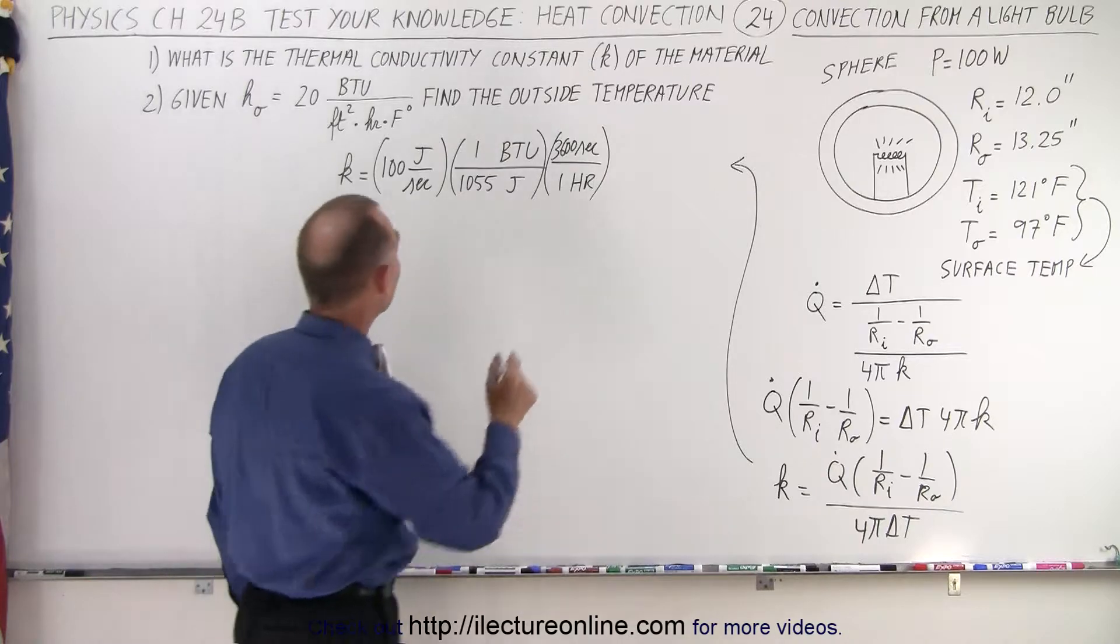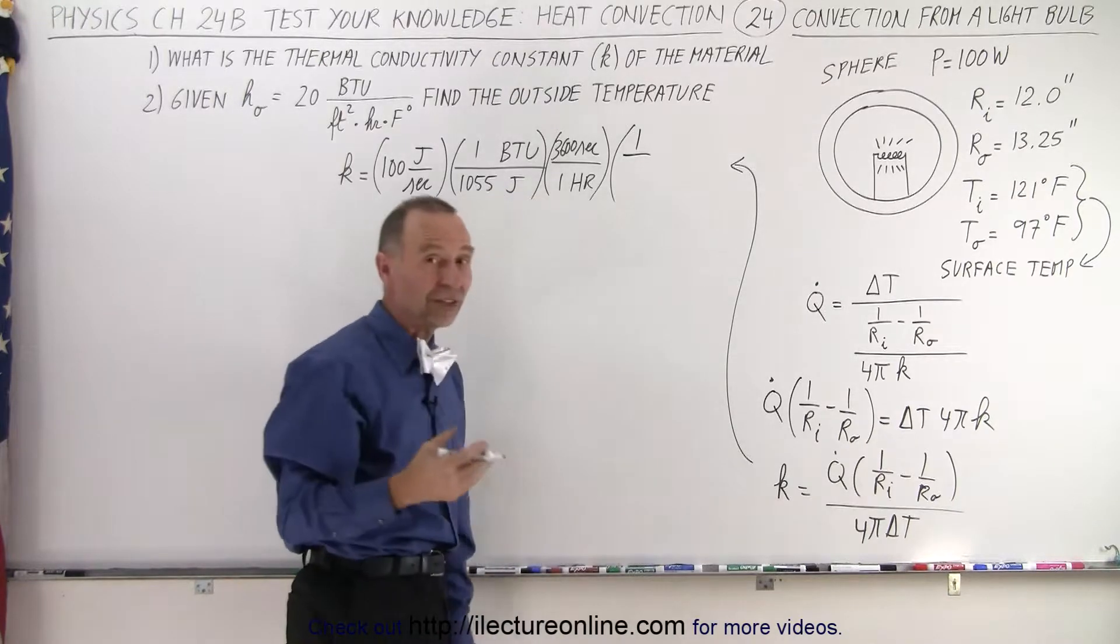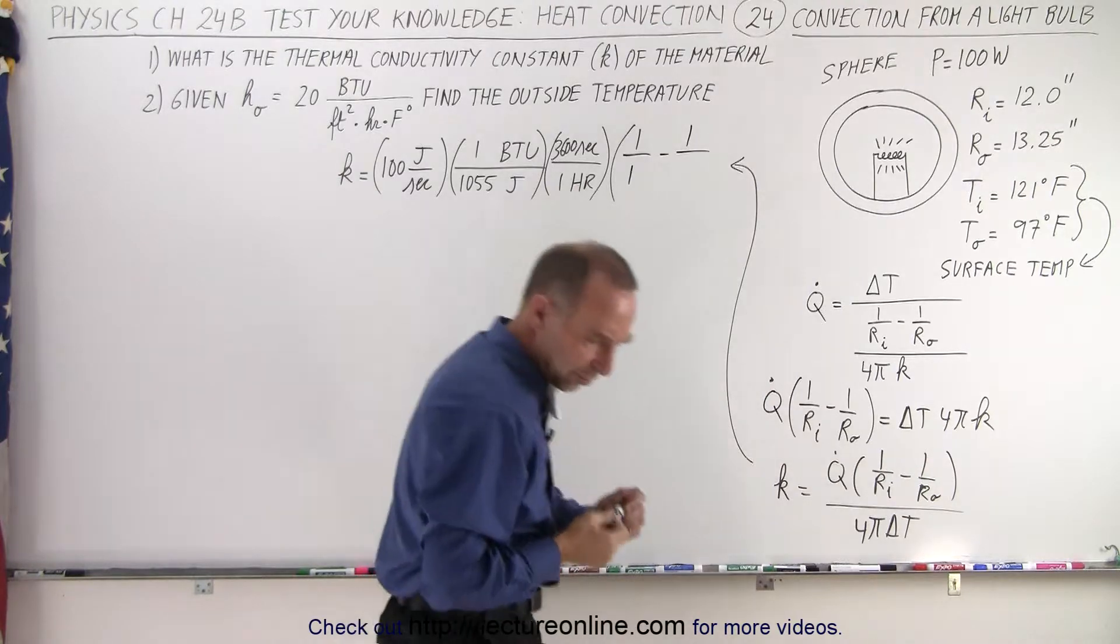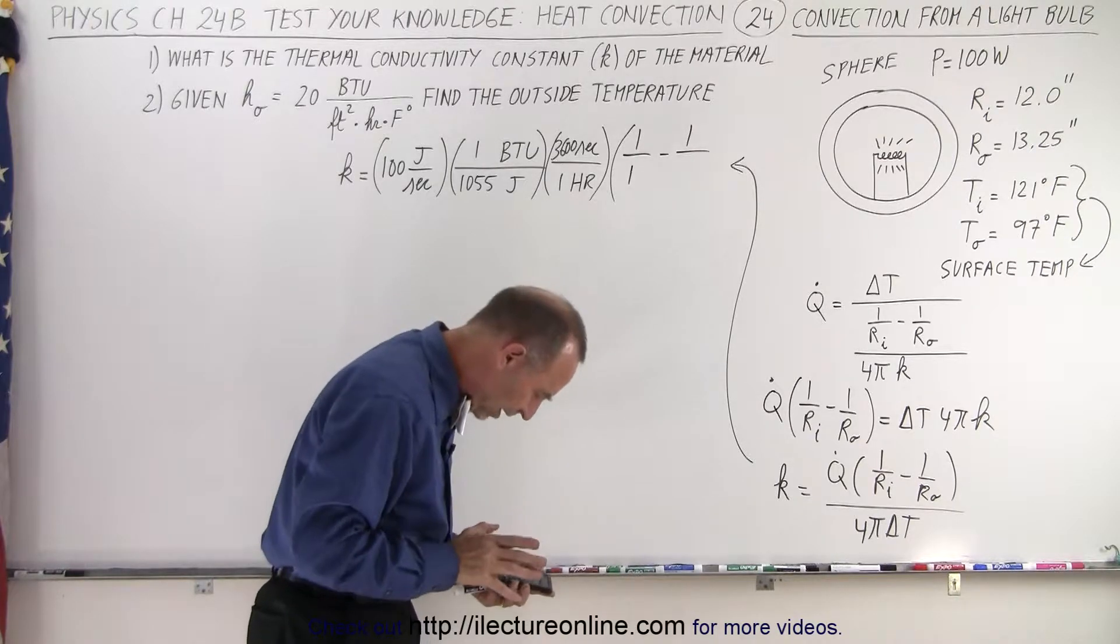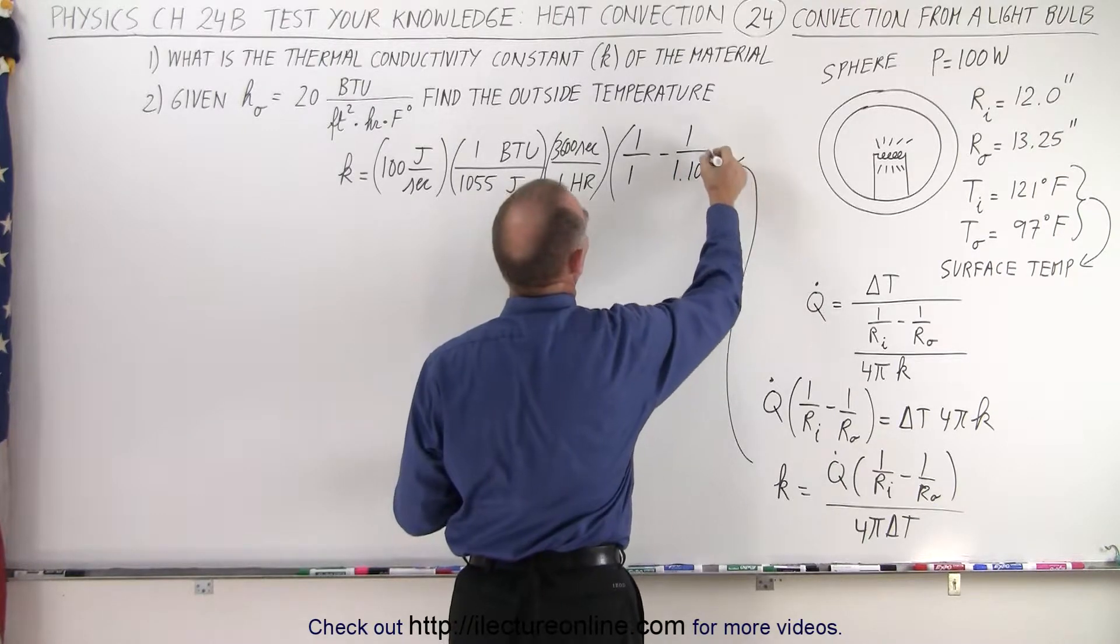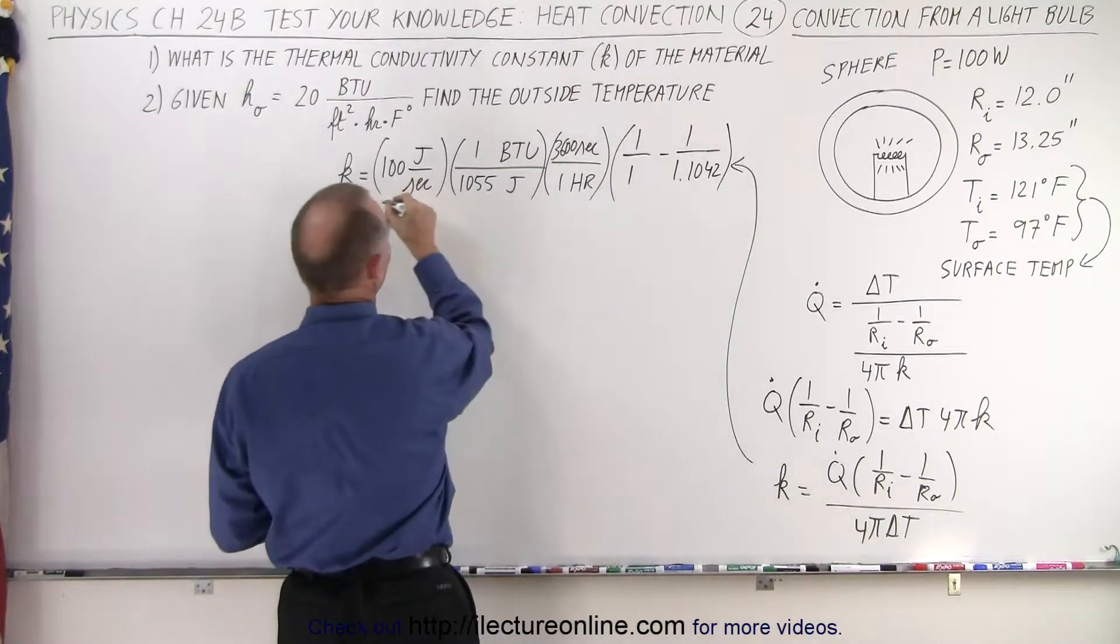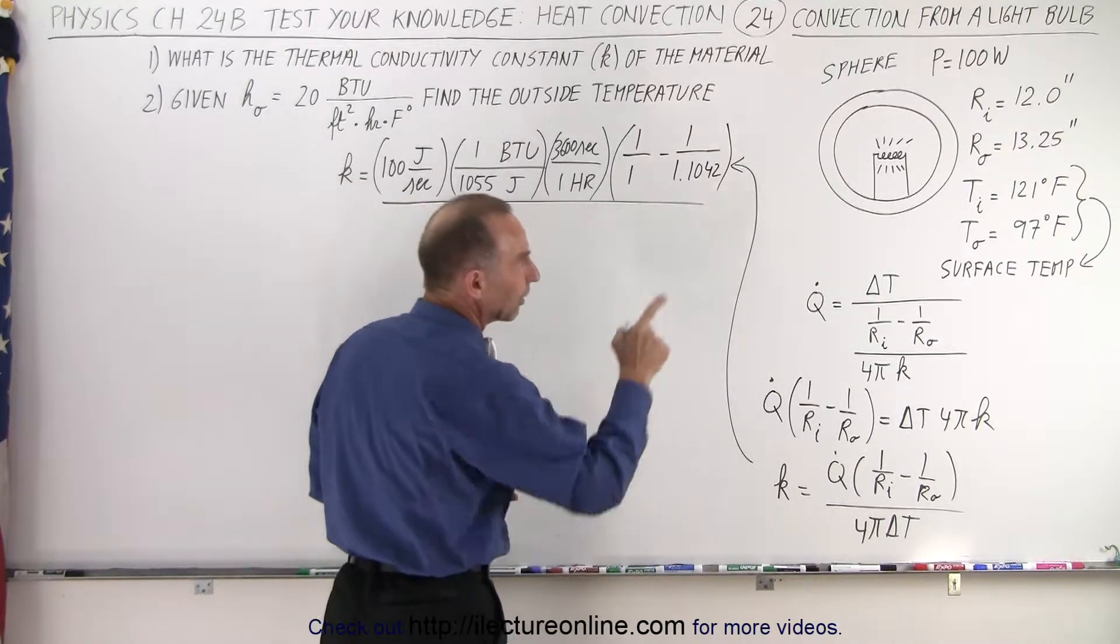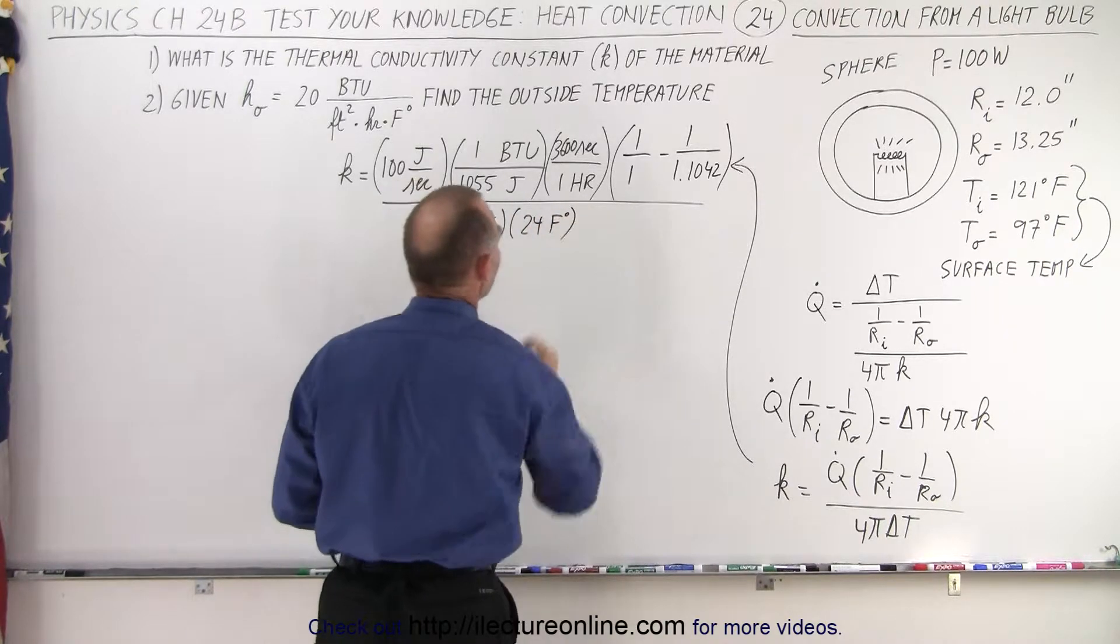Now we have to multiply that times one over the inner radius, one over, the inner radius is 12 inches, that's going to be one foot, so it's one over one minus one over, well what's 13 and a quarter inches in feet? 13.25 divided by 12 gives us 1.104, 1.1042, so that's one over that many feet for the radius.